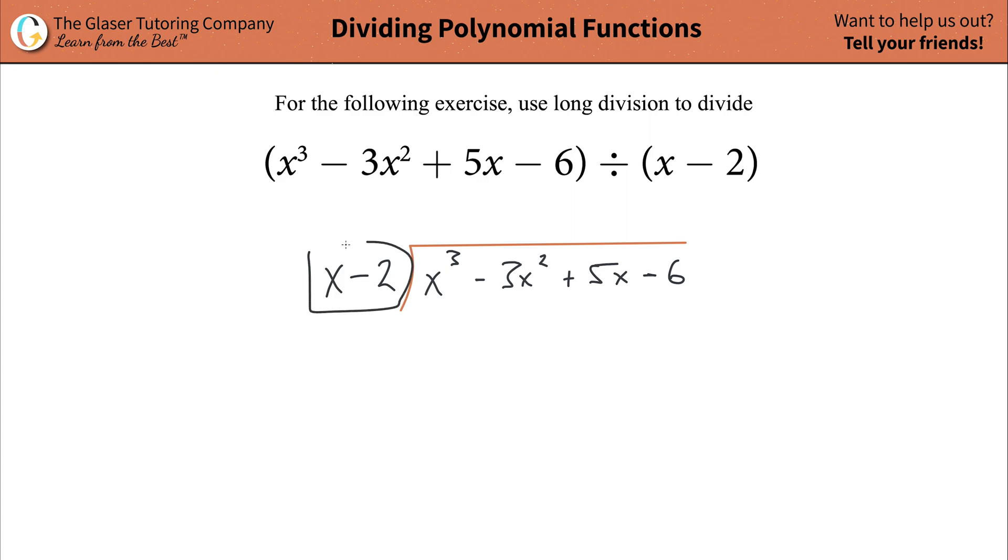Let's look at your divisor. You're going to locate the term with the highest power of x in it. It turns out to be this one x term. And you're going to take this one x term and divide it into the term with the highest power of x in your dividend.